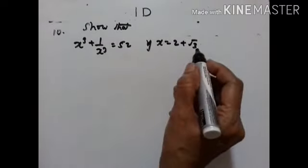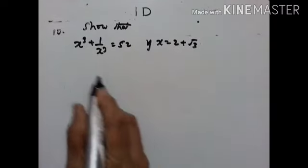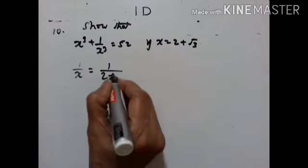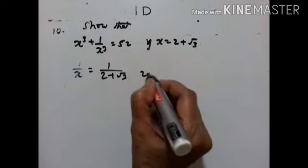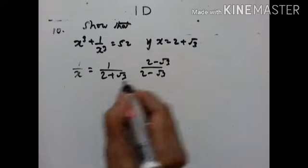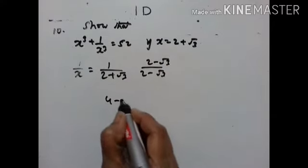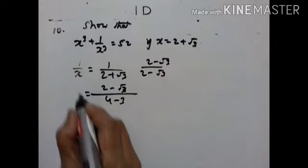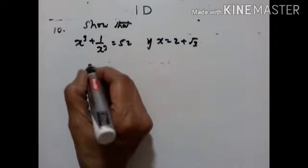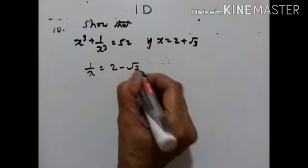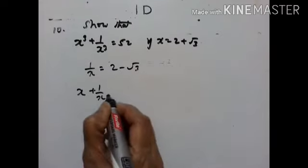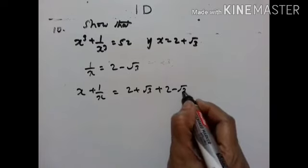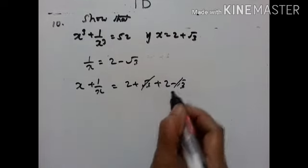Tenth problem: x equals 2 plus √3. We have to show that x³ plus 1/x³ equals 52. Since x = 2 plus √3, then 1/x = 1/(2 plus √3). Rationalizing by multiplying by (2 minus √3): denominator gives 4 minus 3 = 1, so 1/x equals 2 minus √3. Therefore x plus 1/x equals (2 plus √3) plus (2 minus √3) = 4.